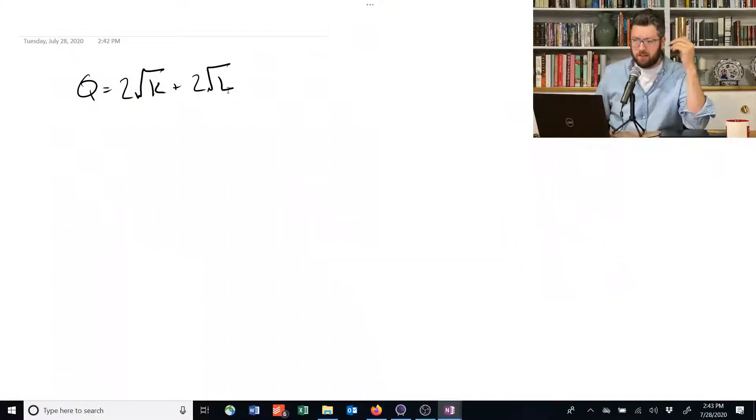So maybe that's all a little bit abstract. Let me go through a simple example to calculate returns to scale. Suppose we've got a production function that looks like this: Q is equal to 2 times the square root of K plus 2 times the square root of L.